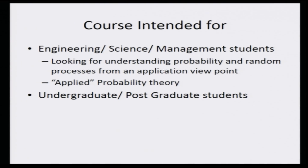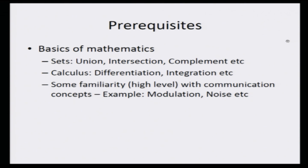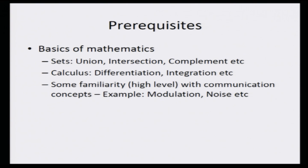One can think of this course as having a flavor of applied probability in the context of communications. As I already said, this course is suitable for both undergraduate and postgraduate students. The prerequisites are very basic — a first-year course in engineering or science mathematics, covering concepts such as sets (union, intersection, complement), calculus (differentiation and integration), and some familiarity with communication concepts such as transmit symbols and modulation. Although strictly speaking this is not necessary, I will introduce these as we go along. I hope this course will be beneficial to you and that you will enjoy the content. See you in the modules. Thank you very much.